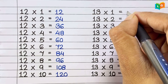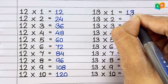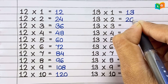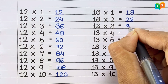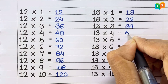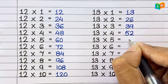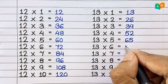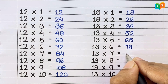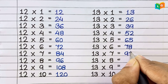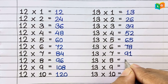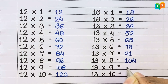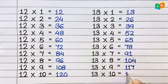Now let's see table of 13. 13 1s are 13, 13 2s are 26, 13 3s are 39, 13 4s are 52, 13 5s are 65, 13 6s are 78, 13 7s are 91, 13 8s are 104, 13 9s are 117, 13 10s are 130.